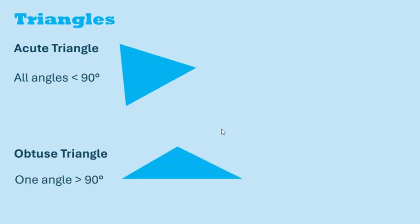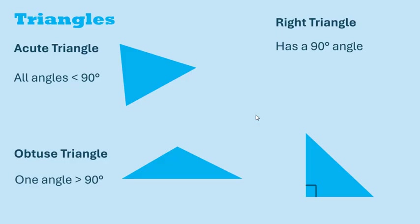Let's look at a bit of geometry now. The acute triangle has all angles less than 90 degrees, while the obtuse triangle has one angle larger than 90 degrees. The right triangle has a 90 degree angle.